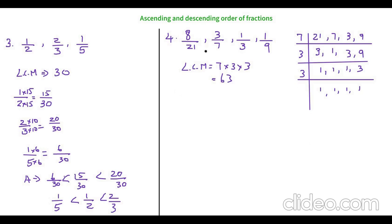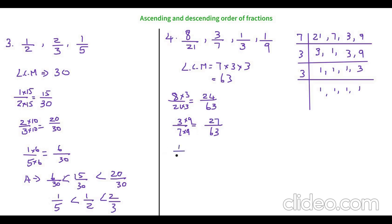Now let's change the unlike fractions to like fractions with denominator 63. For 8 by 21, multiply by 3 to get 24 by 63. For 3 by 7, multiply by 9 to get 27 by 63. For 1 by 3, multiply by 21 to get 21 by 63. And for 1 by 9, multiply by 7 to get 7 by 63.